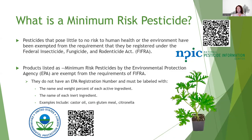So what's a minimum risk pesticide? The EPA breaks that down into different classifications. Pesticides that pose very little risk to human health or the environment have been exempted from the requirement that they be registered under the FIFRA Act. Products listed as minimum risk pesticides by the EPA don't have to have an EPA registration number but must be labeled with name, weight percent of each active ingredient. Examples include castor oil, corn gluten meal, and citronella.